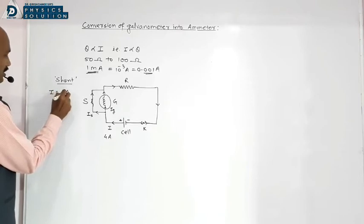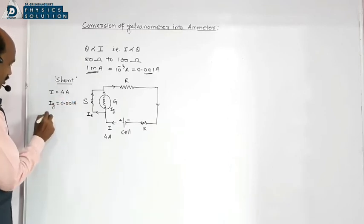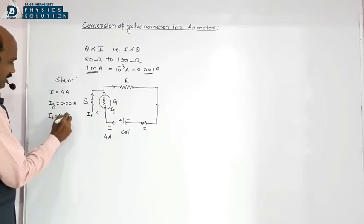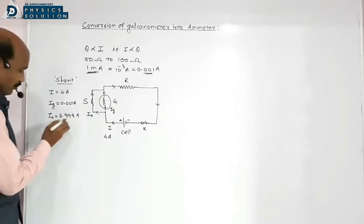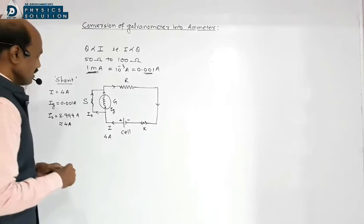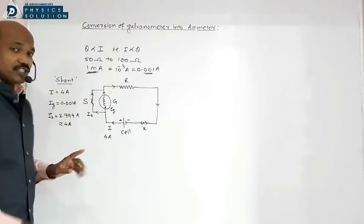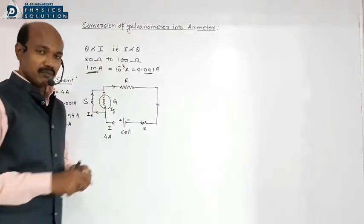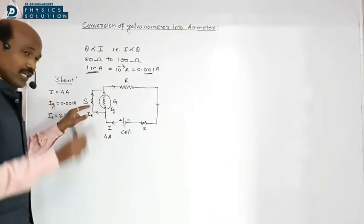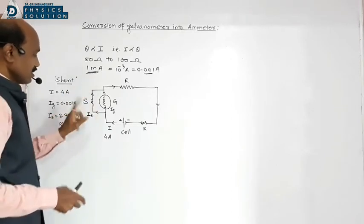If total current I = 4 ampere and IG = 0.001 ampere, then IS = 3.999 ampere ≈ 4 ampere. So maximum current should pass through shunt resistance, meaning shunt resistance value should be minimum — because resistance and current are inversely proportional. A very small value like 0.001 ohm or 0.1 ohm ensures maximum current flows through the shunt, protecting the galvanometer coil from damage.